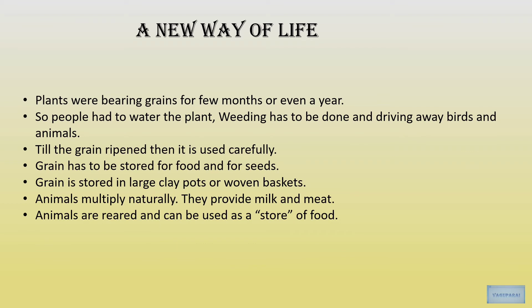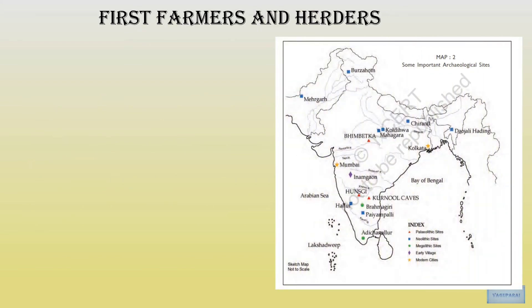A new way of life emerged. Since plants bore grains for only a few months or a year, people had to water the plants, weed them, and drive away animals and birds. After the grain ripened it was used carefully. Grains were stored as food and for seeds, kept in large clay pots or woven baskets. Animals multiplied naturally, providing milk and meat. Because of all this, people had to settle down in a place and were called farmers and herders.